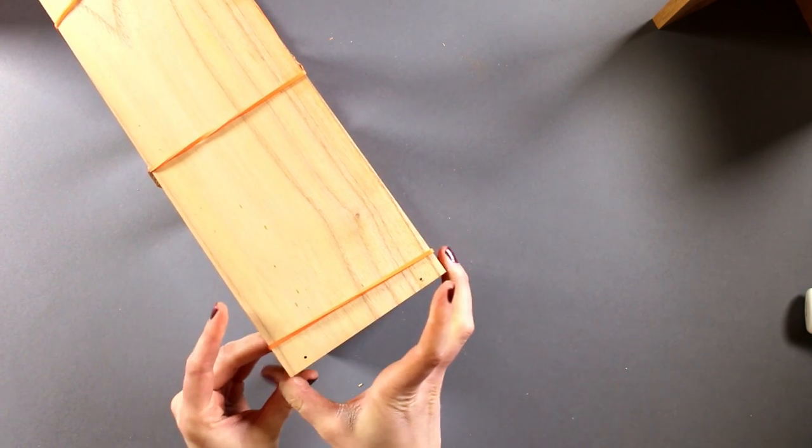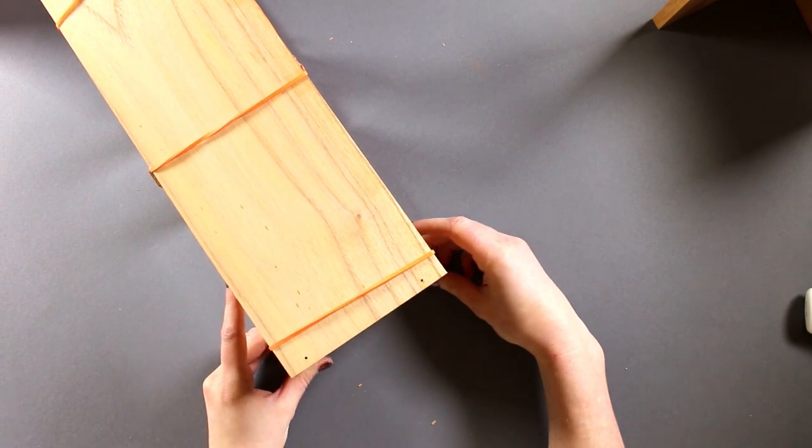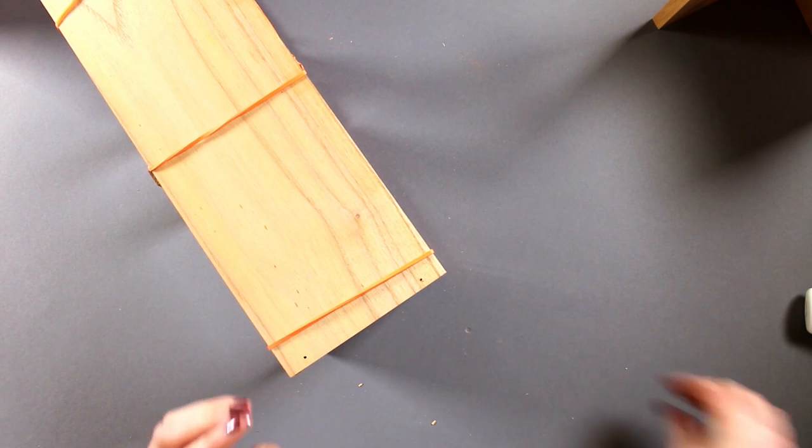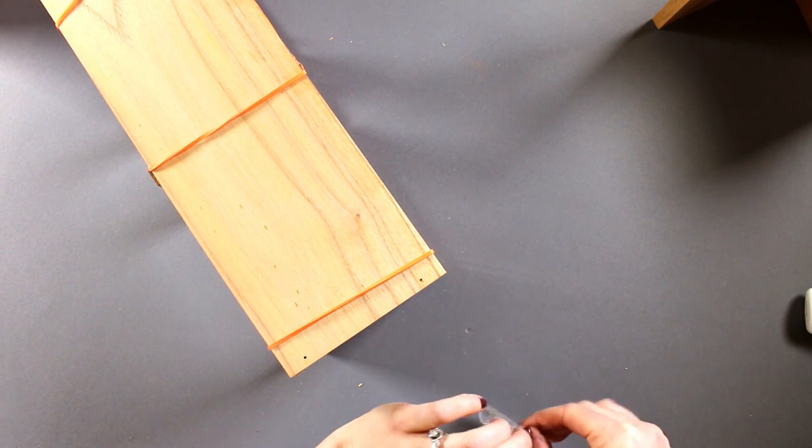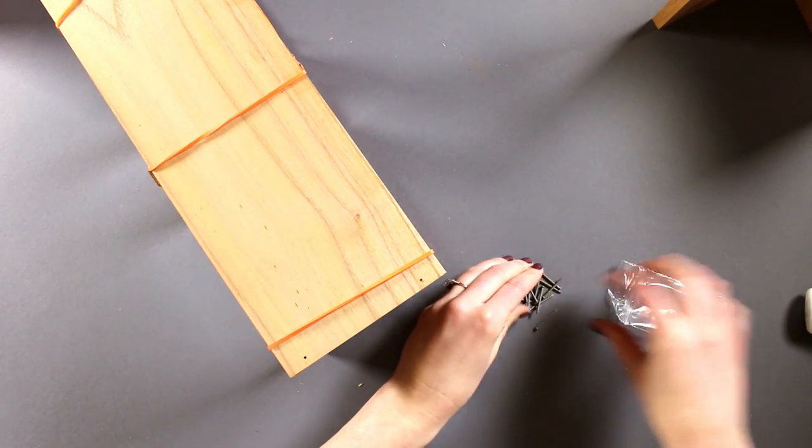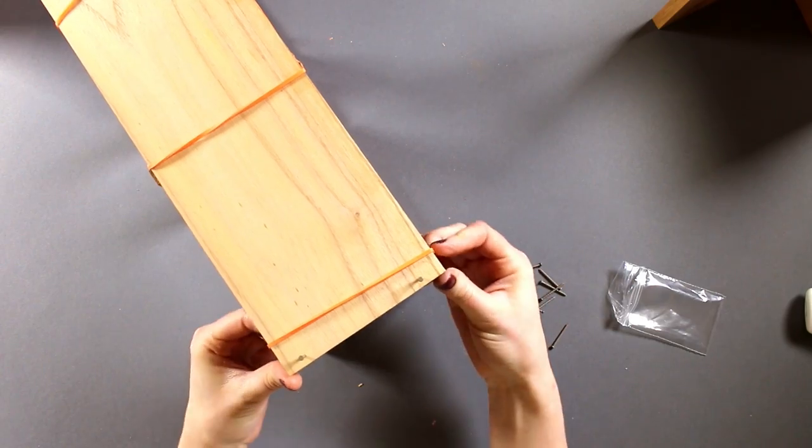holes as to where the nails are supposed to go to help make it a little easier for you. So take out your nails, and you're going to hammer two on each side, just right into those holes that are already there for you.